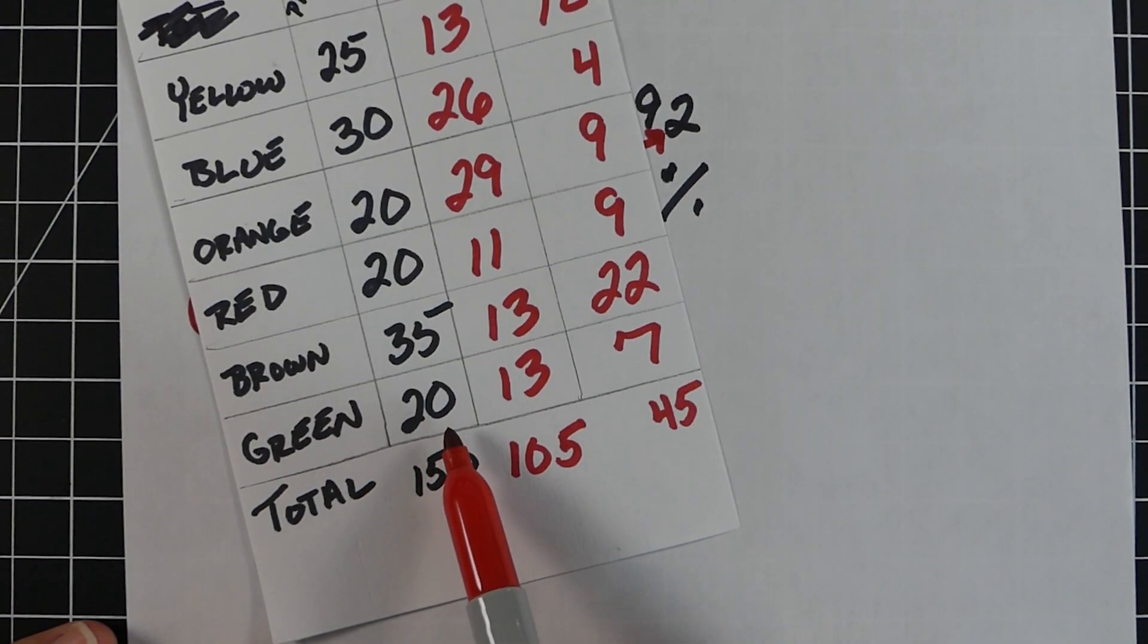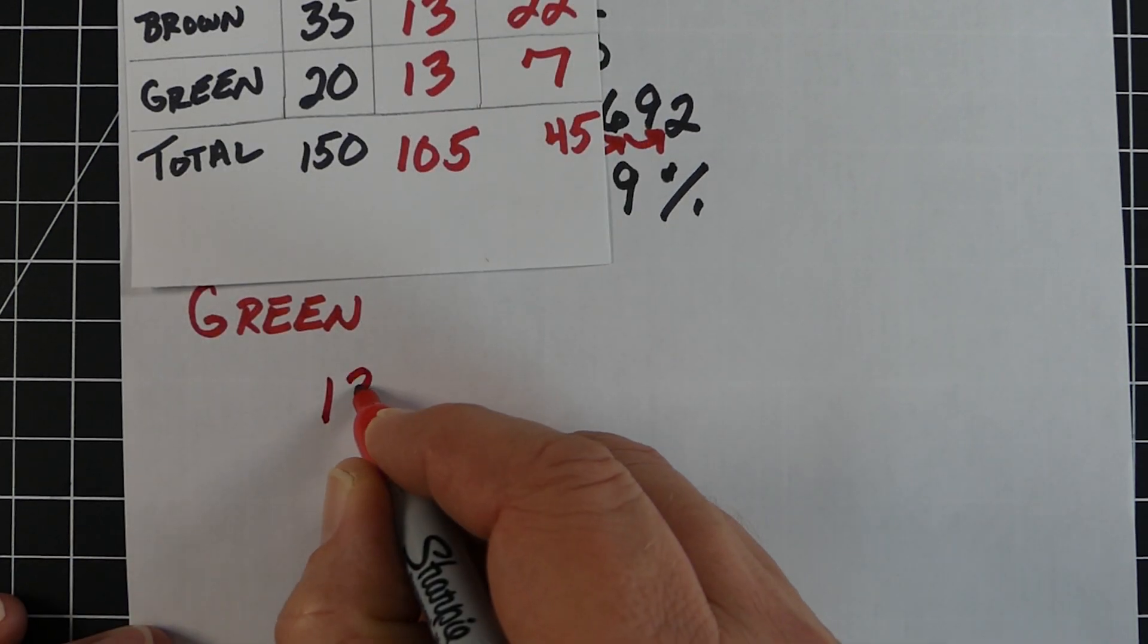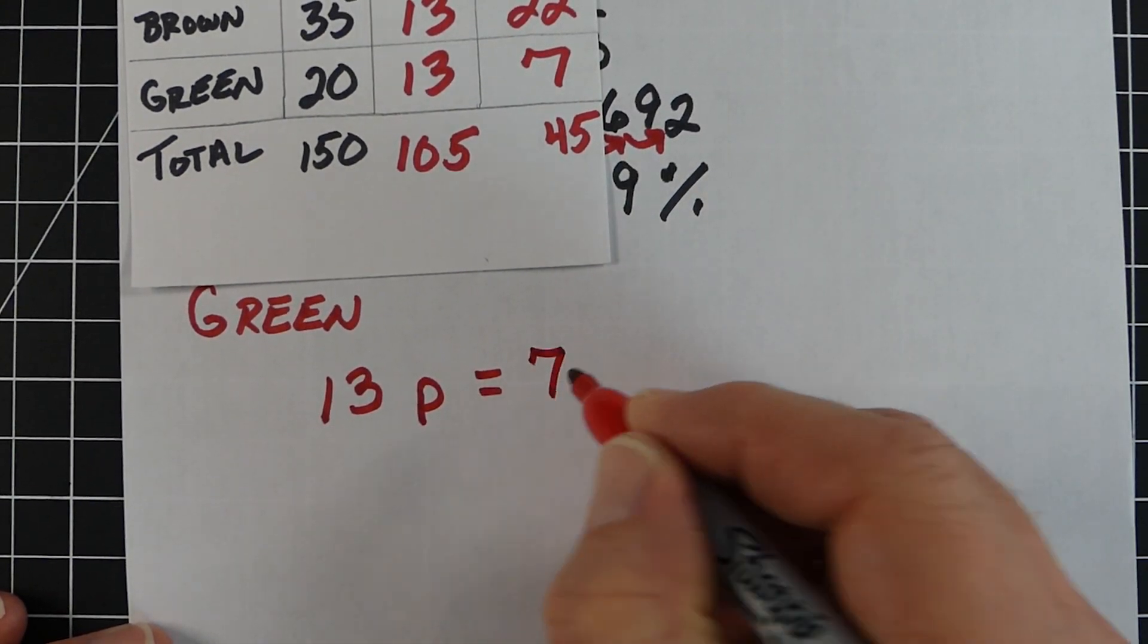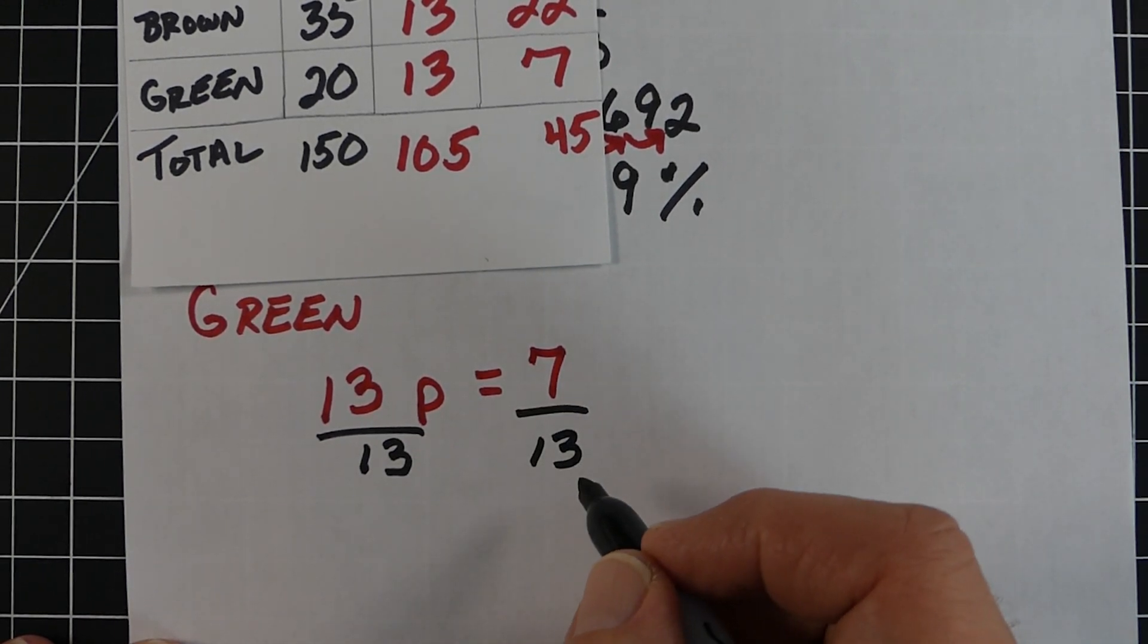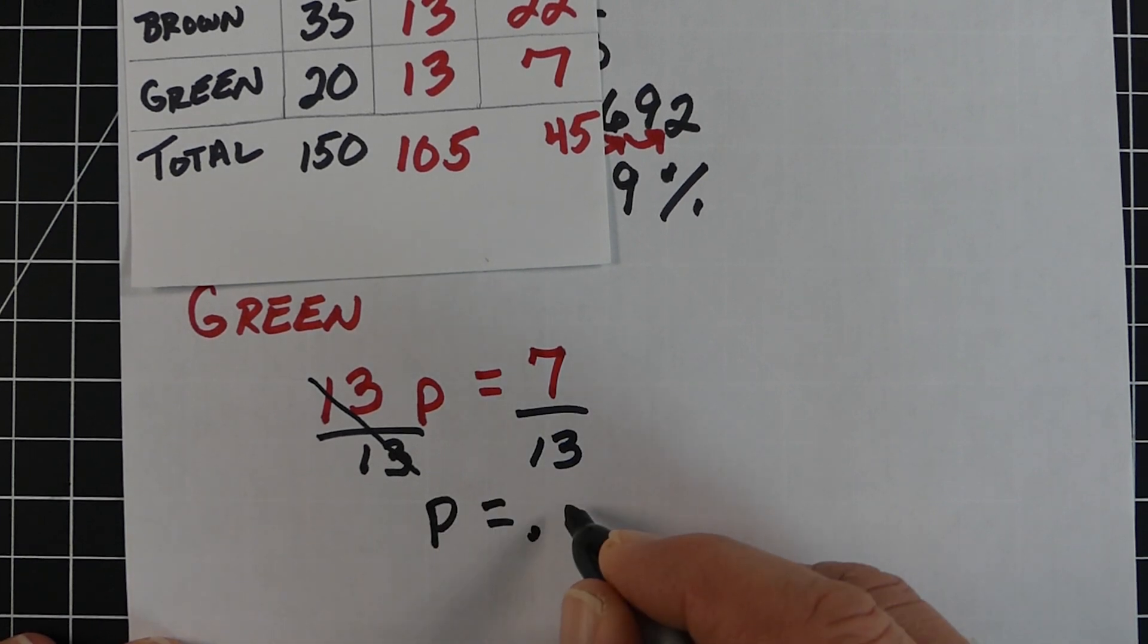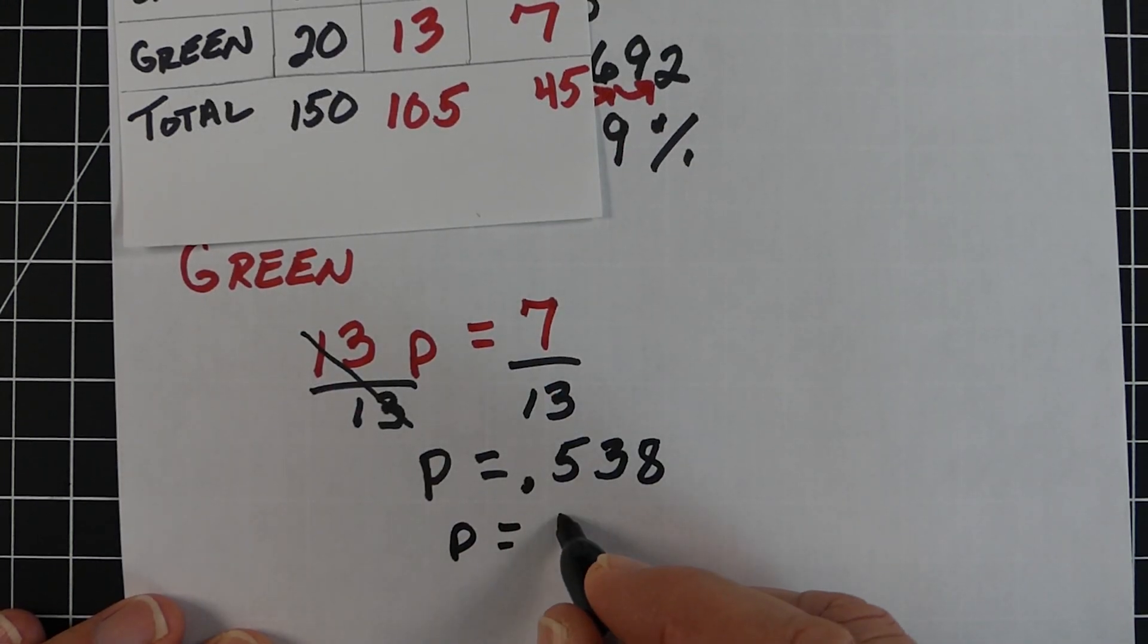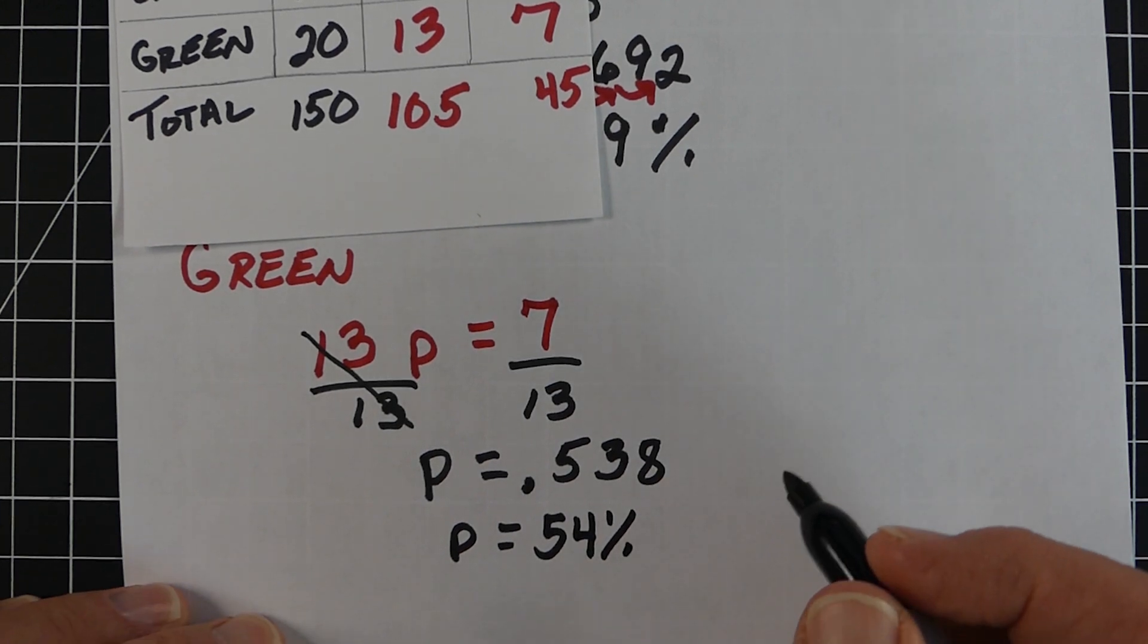The final one is green. We really had 13 total and I was off by 7. Not too bad. Again, we set up this simple one-step equation: 13P equals 7. Divide both sides by 13. Left side is just the variable P, our goal. Right side, 7 divided by 13 is 0.538. Multiply by 100 to get 53.8%, or we could call it 54%.